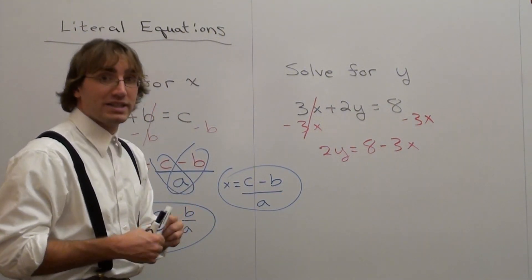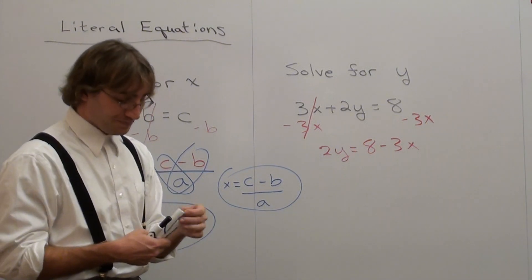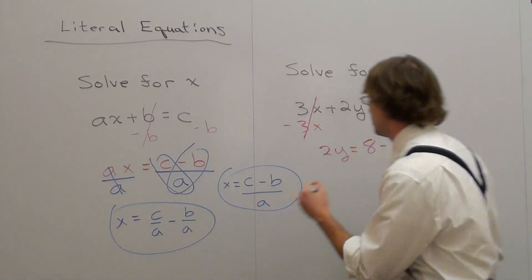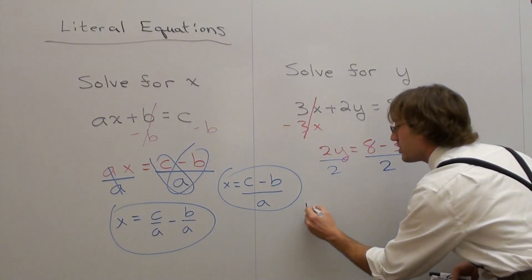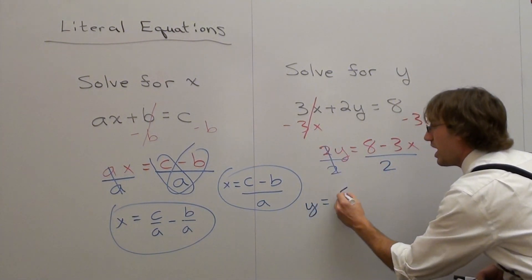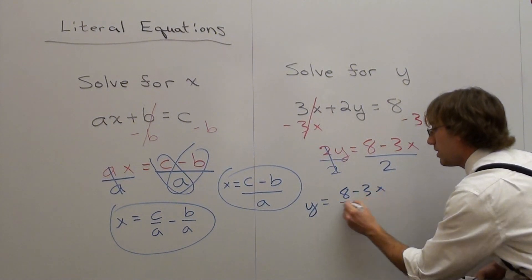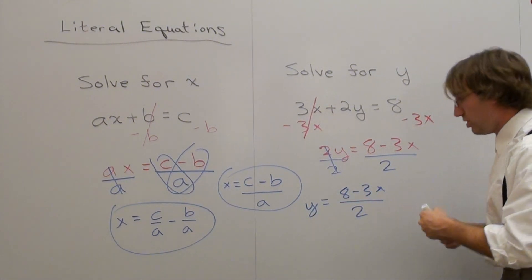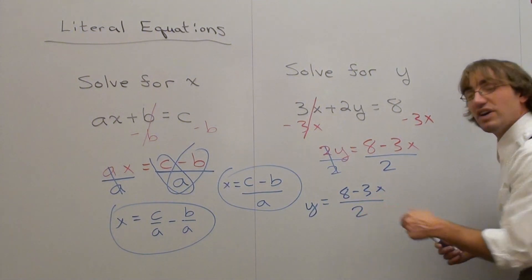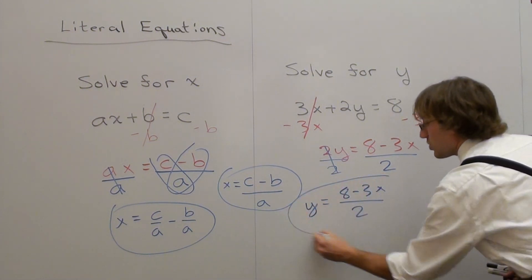Now, I want to get y by itself, so I divide by 2, but what I do on one side, I do on the other. And my answer is y equals 8 minus 3x over 2, but I could also take each numerator and divide it by a denominator. This answer will suffice, though.